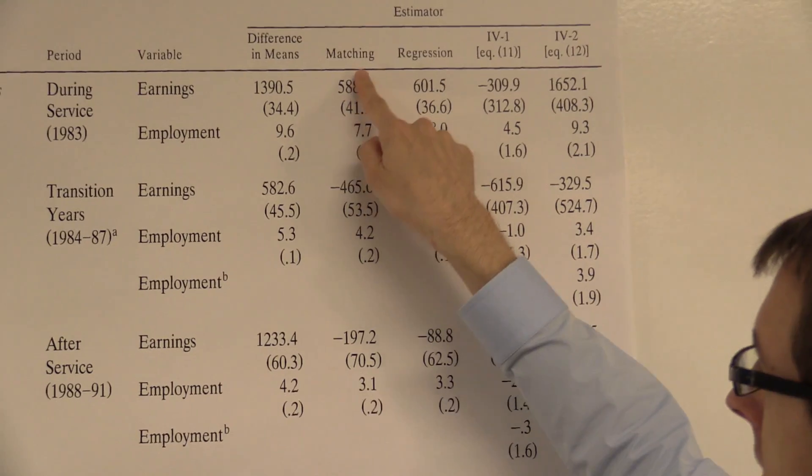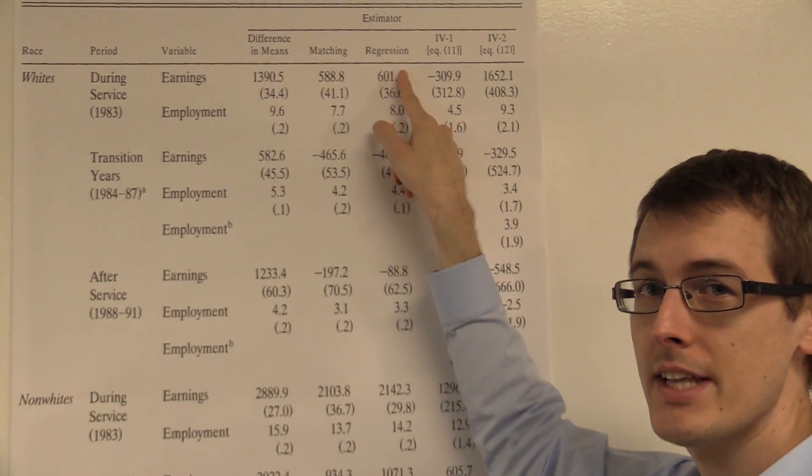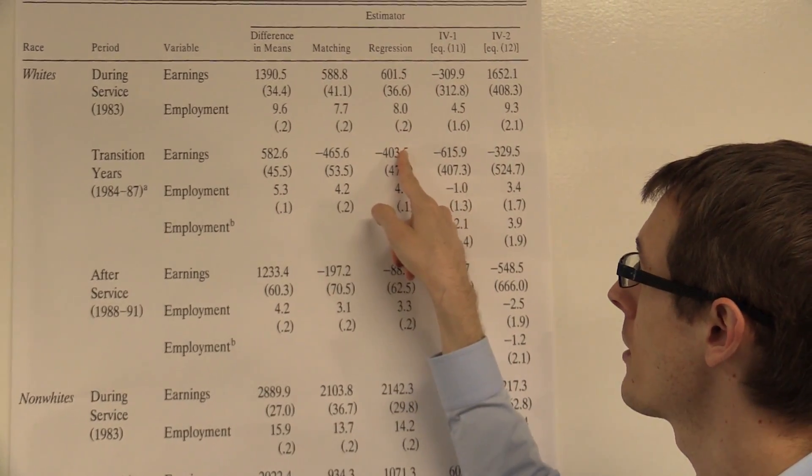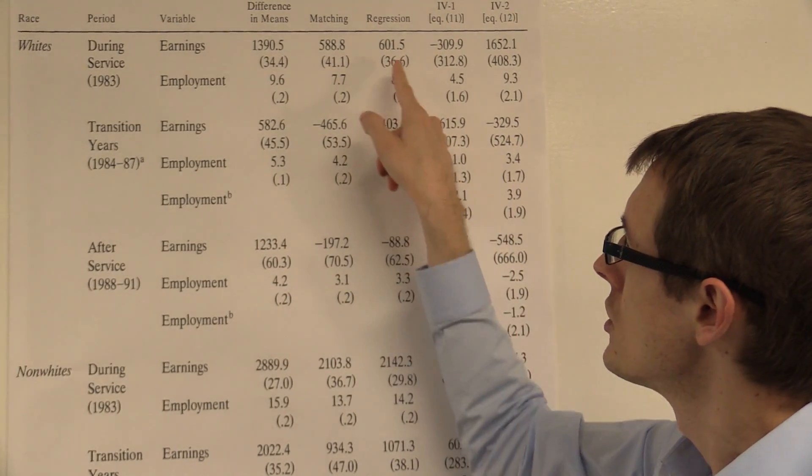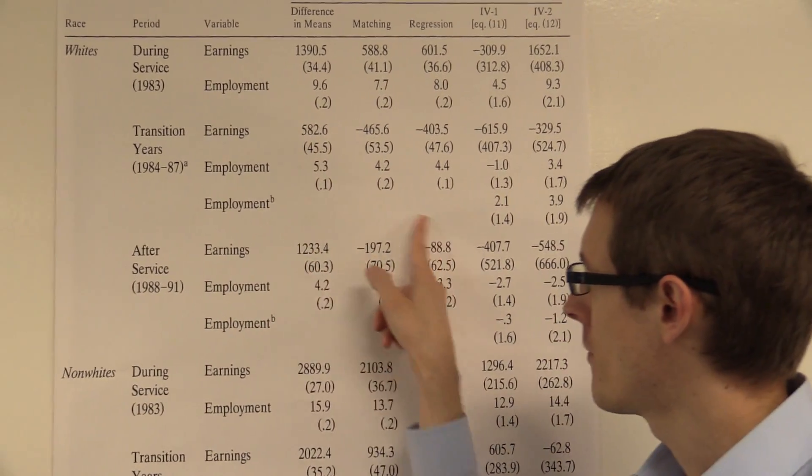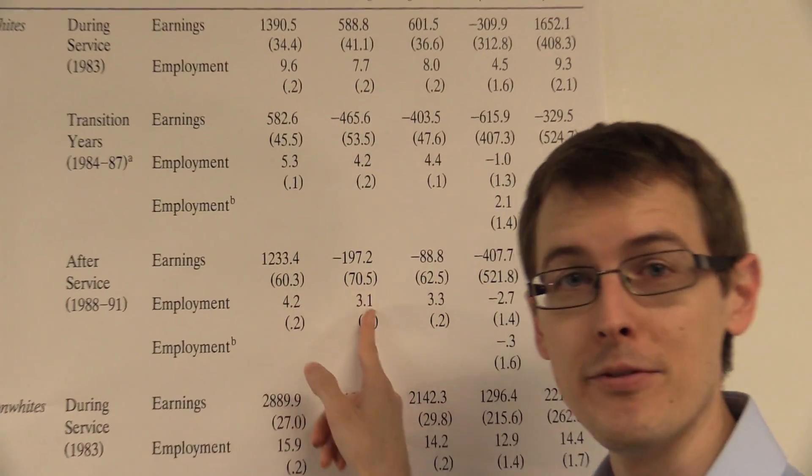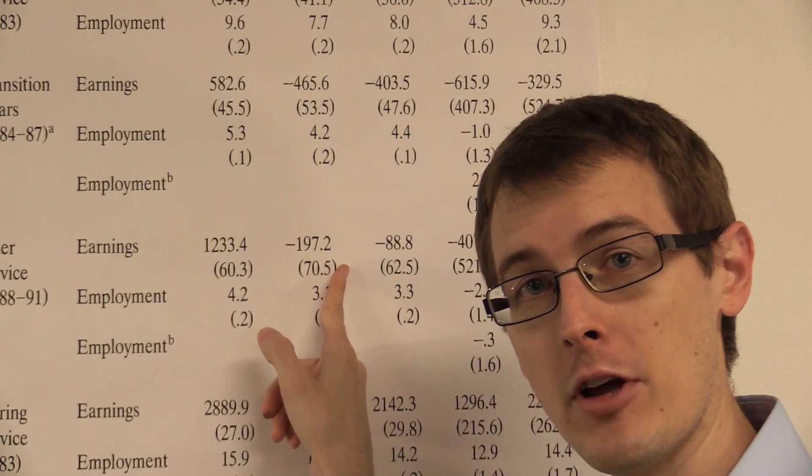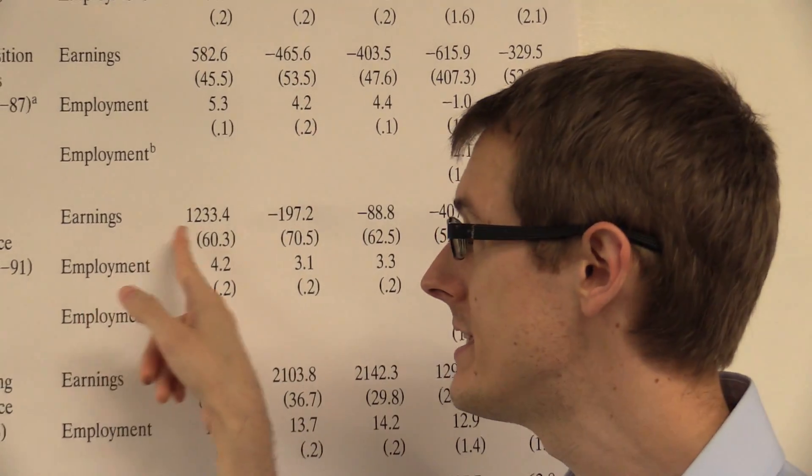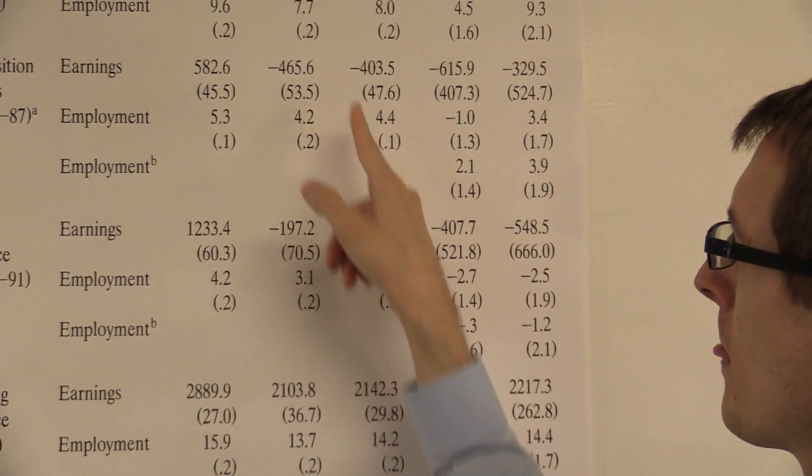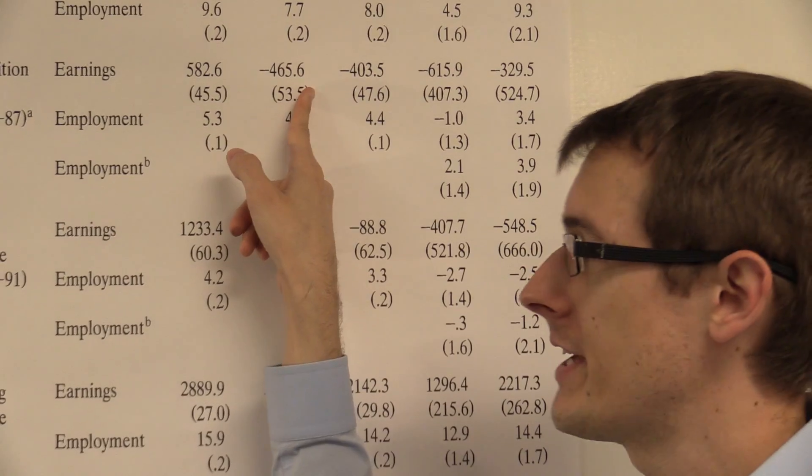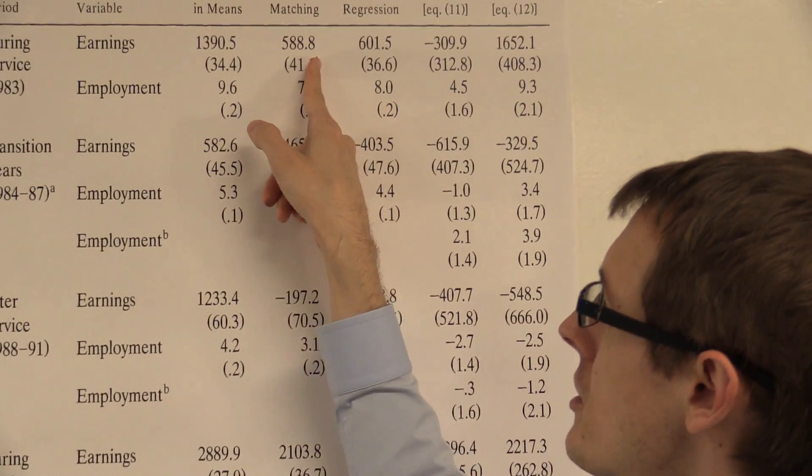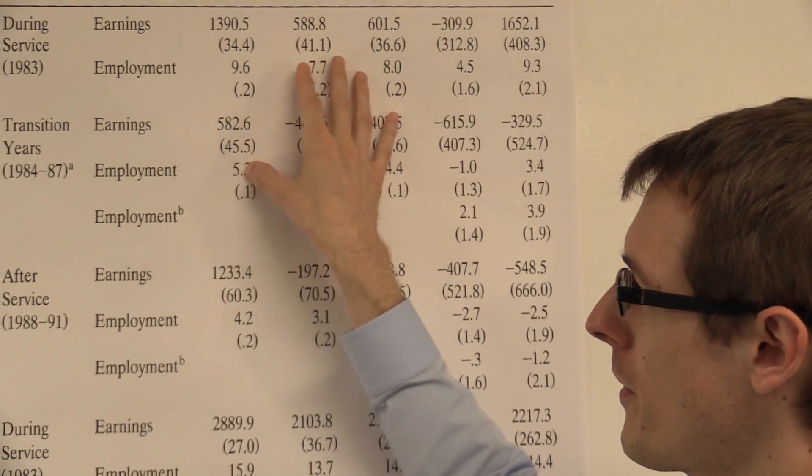Here in the first column, he's got the matching estimates. And in the third column, he's got the regression estimates. So now we see that after service, we actually get a negative effect. So actually enlisting in the military hurts your lifetime earnings. The complete opposite thing we see if we just do the raw difference in means comparison. And the same thing is true for the transition years. And during service, you make a little bit more. These are for whites.